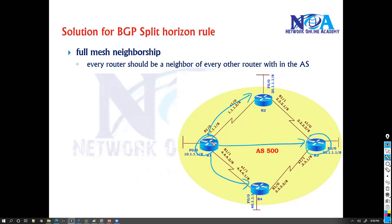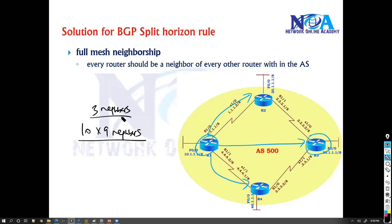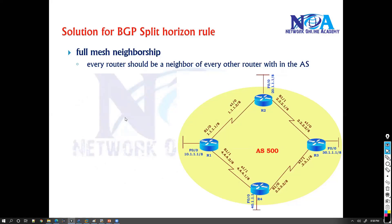So if you have four routers running BGP, every router must have three neighbors. If you have ten routers in your AS, every router must have nine neighbors. That's the kind of full mesh neighbor relationship — not a good option for bigger service provider networks, but for the time being this is something you have to do.